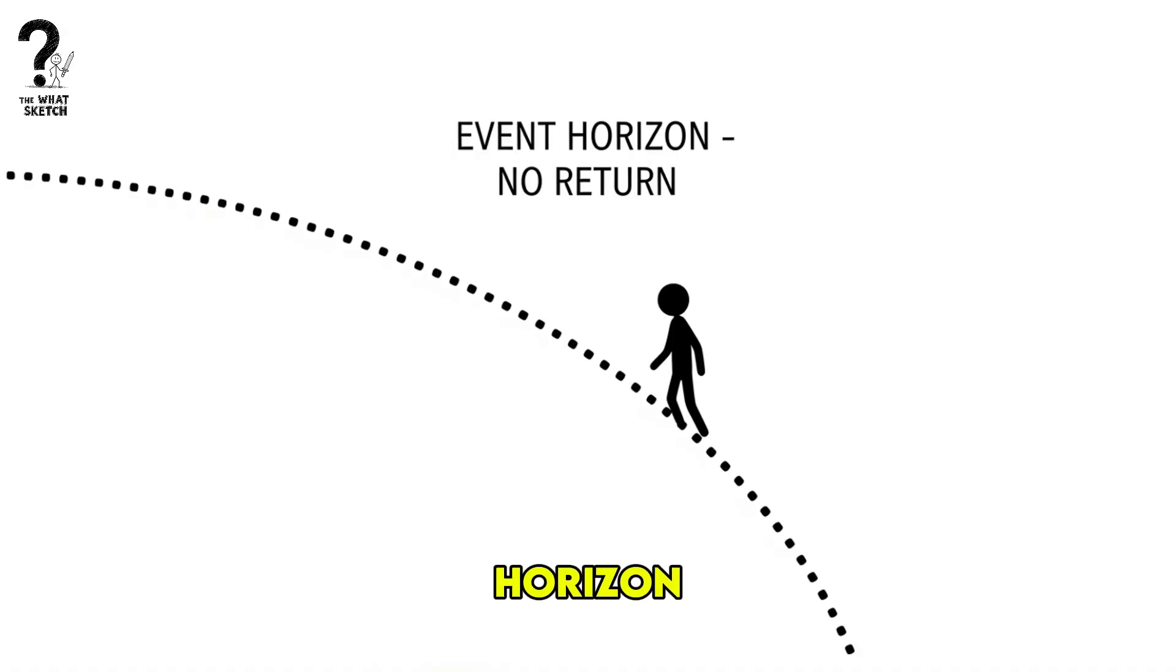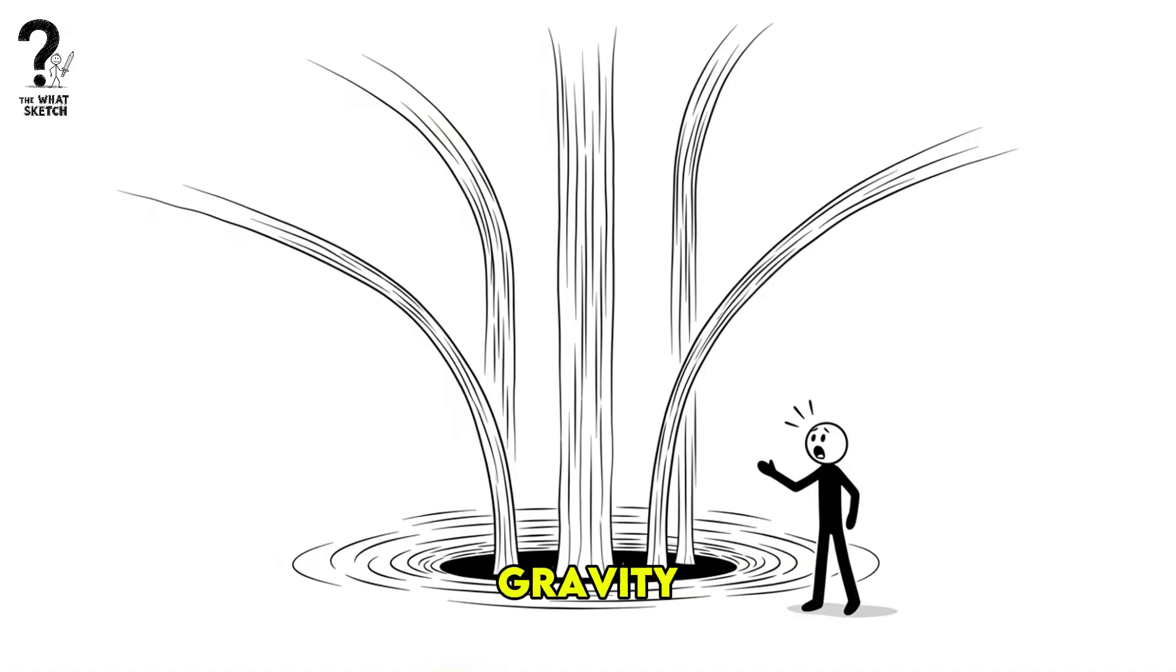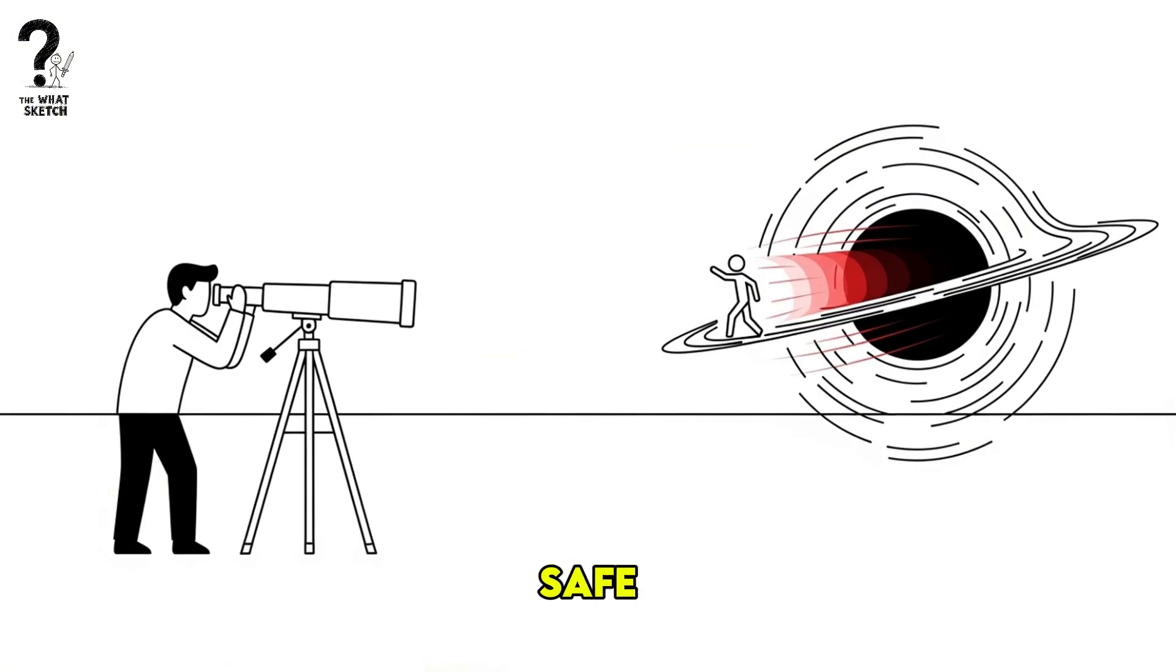This boundary is the event horizon, the point of no return. Gravity here becomes so strong that not even light can escape. To anyone watching from a safe distance, your journey would look bizarre. They'd see you appear to slow down, turn redder, and dim, seeming to freeze at the edge forever.